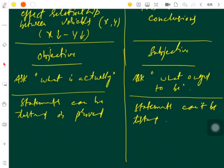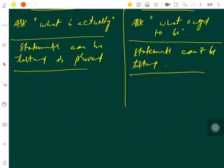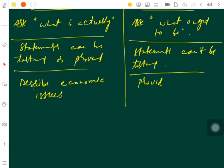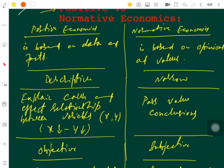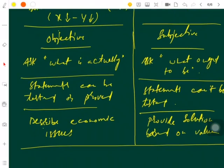Last but not least, under positive economics, it is going to describe economic issues, while under normative economics it is going to provide solutions — everybody is providing a solution for COVID-19 based on value. This is how we differentiate between positive and normative economics. To summarize positive economics: it is based on data and facts, it is descriptive, it explains the cause and effect relationship between variables, it is objective, it asks 'what actually is,' and its statements can be tested or proved.